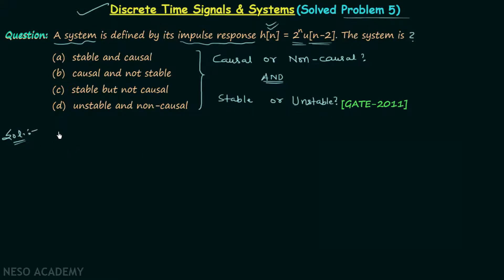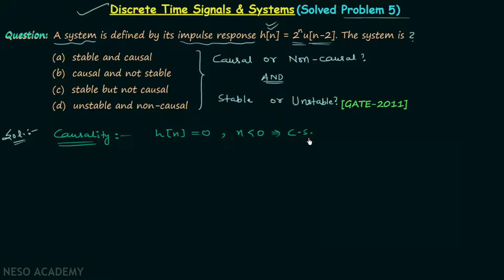We will first discuss the causality of the system. According to the condition, if the impulse response h[n] is equal to zero for all values of n less than zero, then we say the system is a causal system. If this condition is not satisfied, then the system is non-causal.